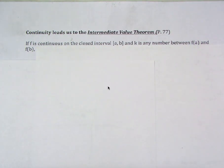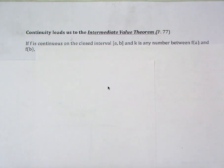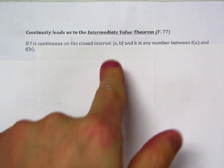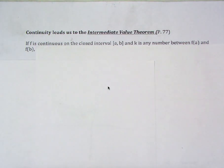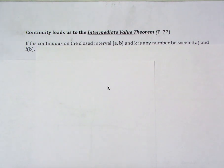The Intermediate Value Theorem says: if F is continuous on the closed interval A to B — so you have to have a continuous function — and K is any number between F of A and F of B. Now F of A and F of B are Y values; A and B are X values, and F of A and F of B are the Y values at those endpoints. So you need a continuous function on a closed interval, and you need a Y value between the Y values of the endpoints. Those are the conditions that have to be met.